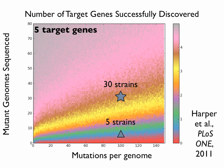It's very easy to see that if you lower the level of background noise — in other words, shift to a lower level of mutagenesis — a smaller number of strains becomes adequate for picking out a higher yield of target gene discovery.